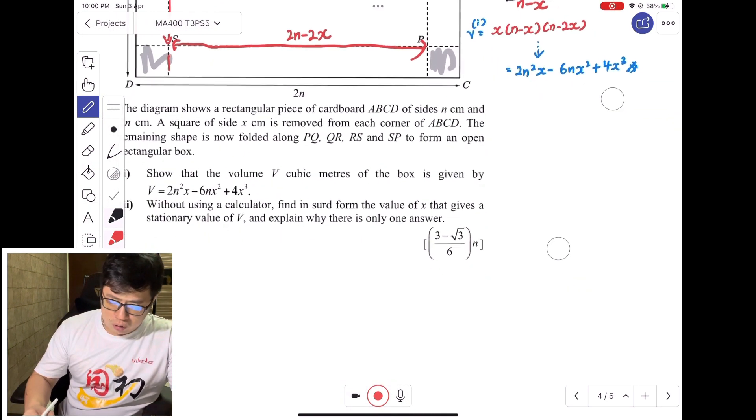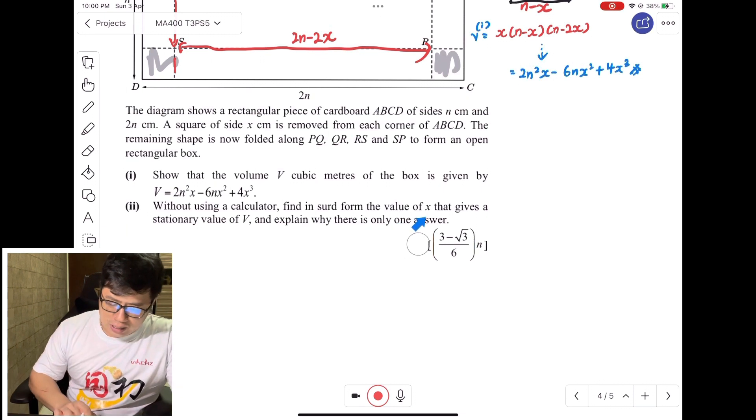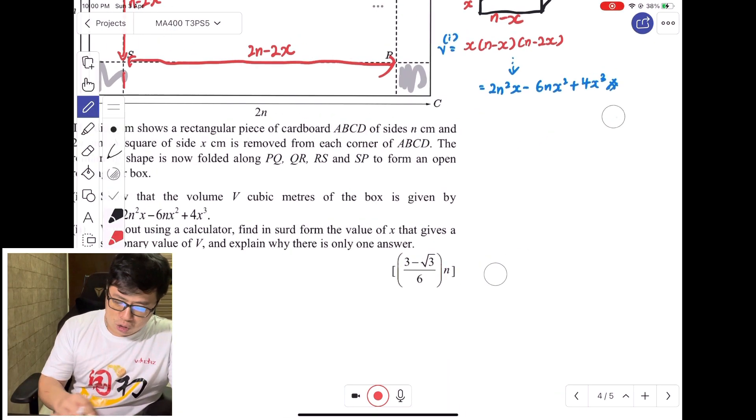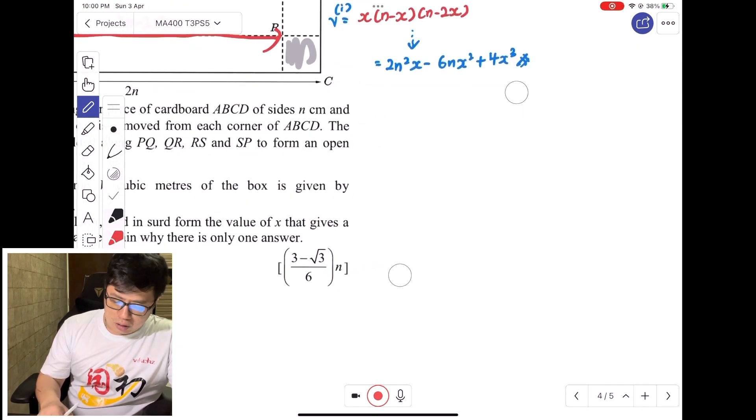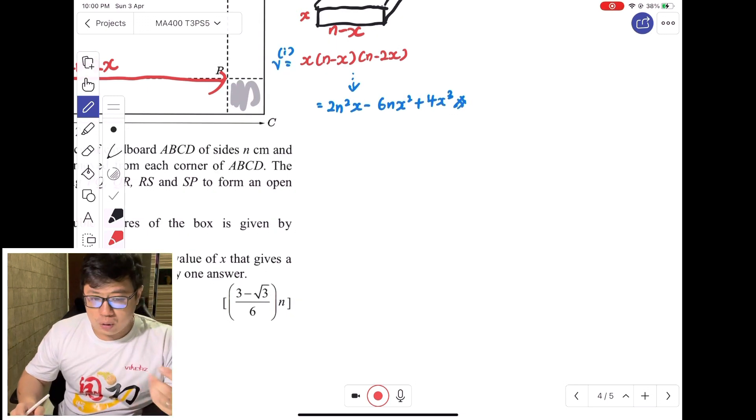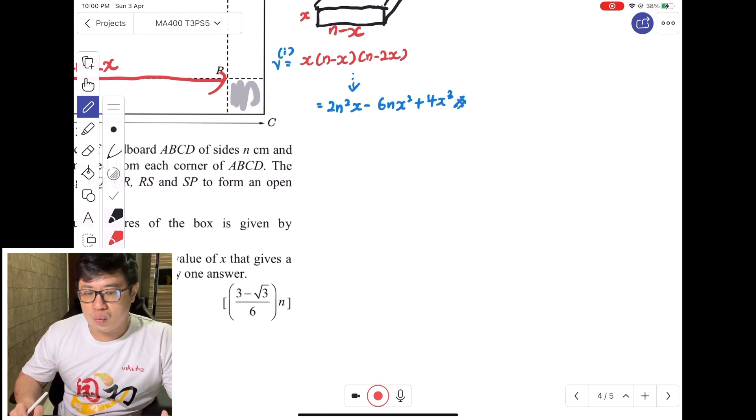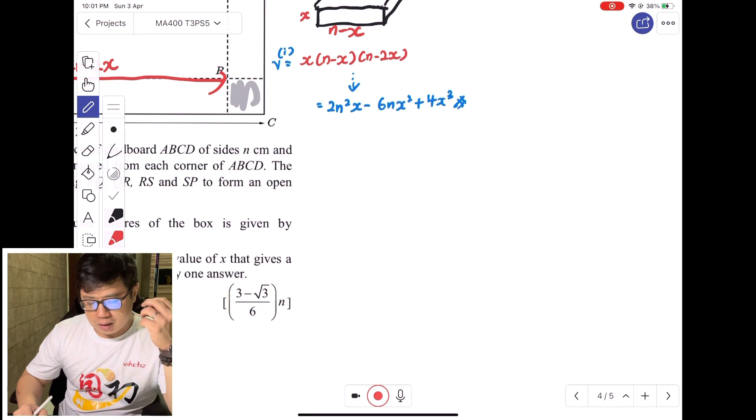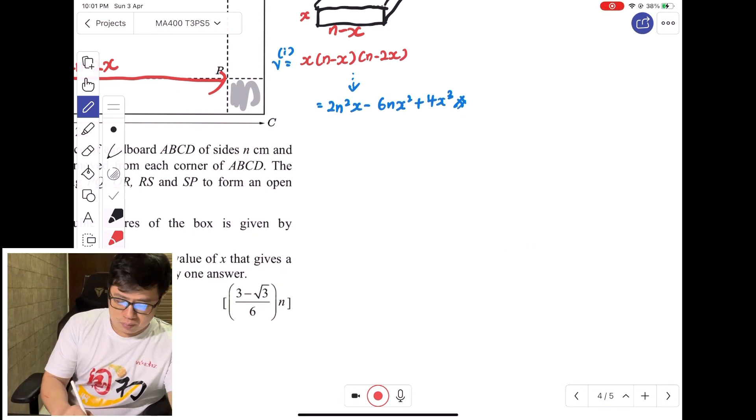The next part is when we use a calculator to find the value of X that gives a stationary value of V, and explain why there's only one answer. Note that we're only looking at stationary values, so we don't really need to worry about whether it's a maximum or minimum or stationary point of inflection. We just need to find the value that gives dV/dX equals to zero, so we want to solve dV/dX = 0 and solve it because we want to say that there is only one solution.